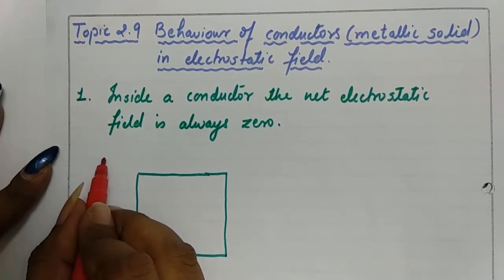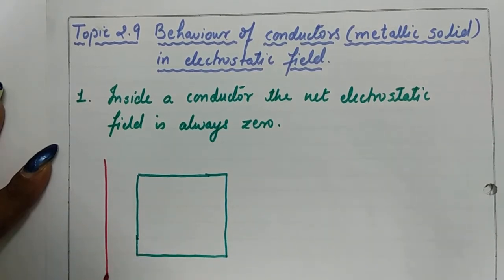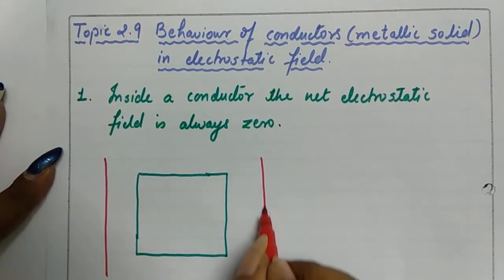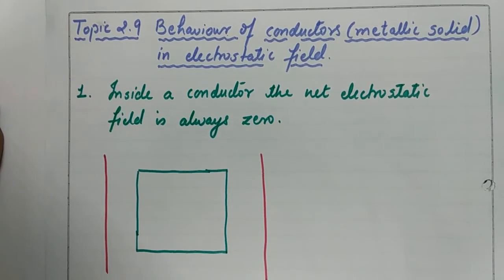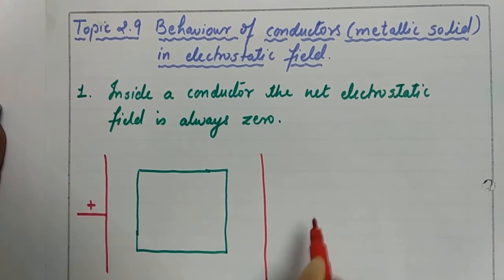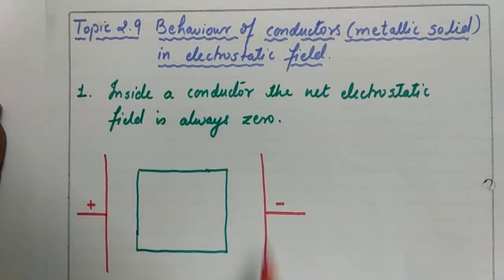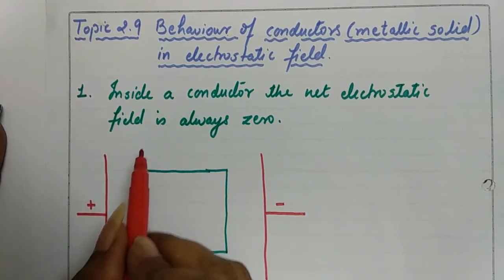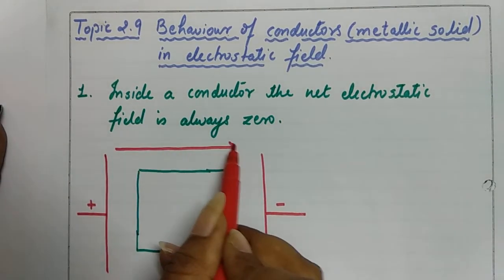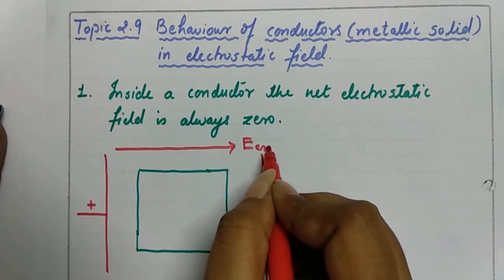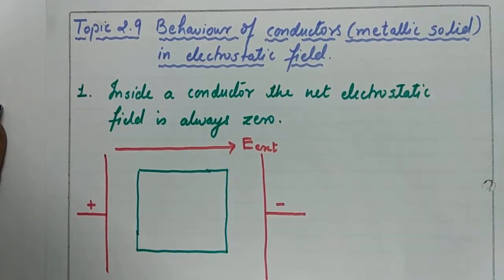How do we create an external electric field? Suppose we have two metal plates. We connect these metal plates with a battery — on this side we connect the positive terminal of the battery and on this side we connect the negative terminal. So this plate becomes positive, this plate becomes negative, and the direction of the electric field within these two plates will be from positive to negative. This is the direction of the external electrostatic field.